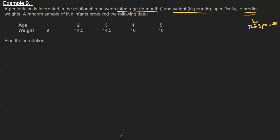Since I'm predicting weight, that means my weight is Y and my age is X. We've got a random sample of five infants ages one through five months and their weights ranging from nine to 16 pounds. I want to use this data to try to make sense of what type of relationship.